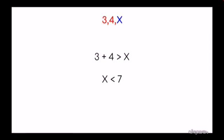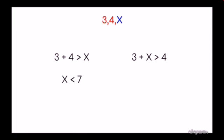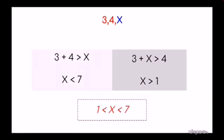That's a little different. What we have done: in this, x is equal to 3. That is 3 plus x is equal to 4. Then, the value of x is 1 to 7. The value of x is 2, 3, 4, 5, 6. This is the triangle inequality theorem.